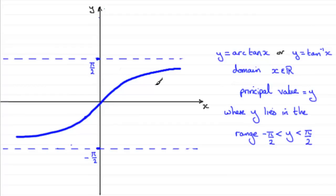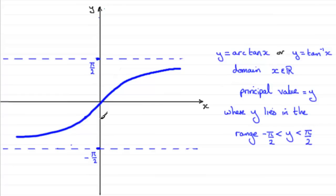What we have then is the graph y equals the inverse tan of x, which now has a domain where x takes any real value. The values in the range, y, are called the principal values, and y lies in a range from minus pi upon 2 to pi upon 2. Any time you use your calculator and do the inverse tan of x, you're always going to get one value of y in this range — the principal value. It's very important that you learn this graph and realize what type of values y takes, as we'll see when we tackle inverse trig equations in the next few videos.